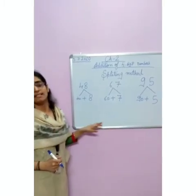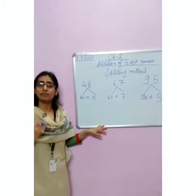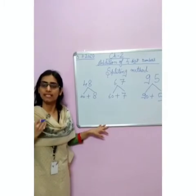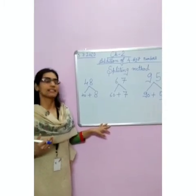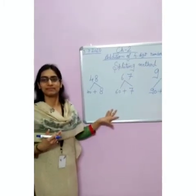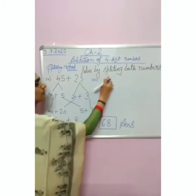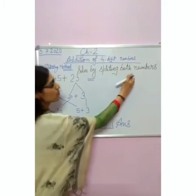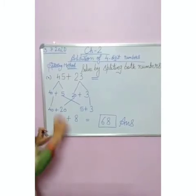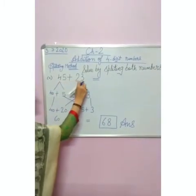Now, we have our exercise in our book where we have to solve the addition through the splitting method. How will we solve that? Let us see. Our question is: solve by splitting both numbers. We have two numbers: 45 plus 23.